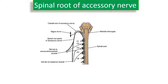The nucleus of the spinal root of the accessory nerve is located in the spinal nucleus in the anterior grey column of the spinal cord, spanning the upper five cervical segments. They exit as multiple rootlets at these upper five segments, ascend up through the foramen magnum, traverse across the posterior cranial fossa, and emerge with the cranial root of the accessory nerve through the jugular foramen.